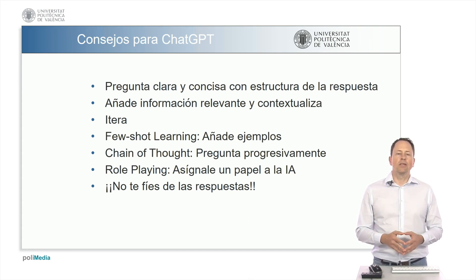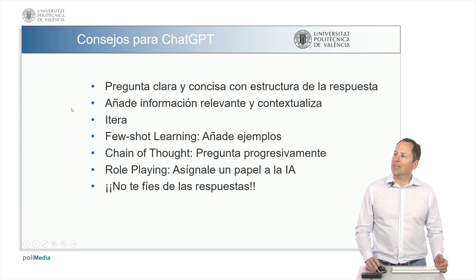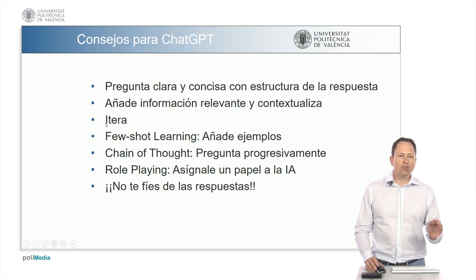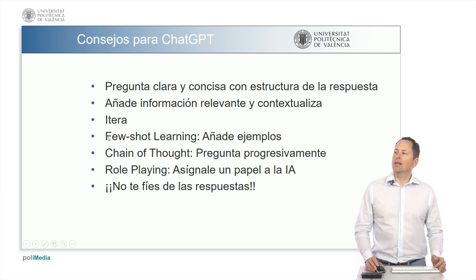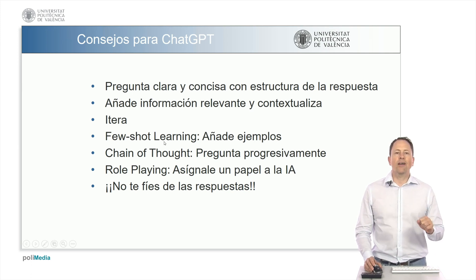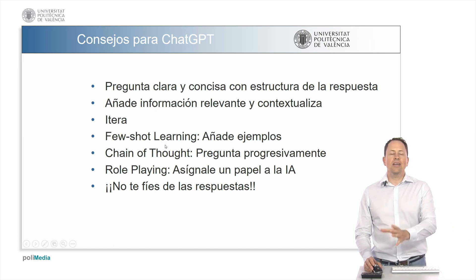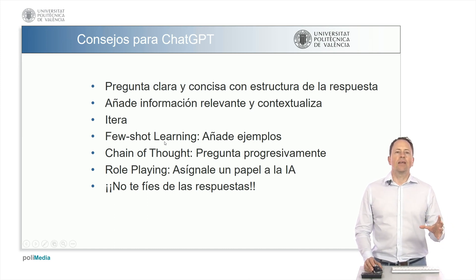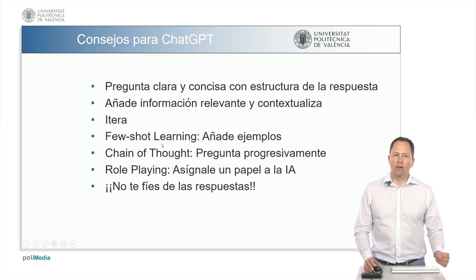Often it might not provide the exact result initially, requiring us to iterate. It might take 10 or 15 questions before we obtain the desired result. We can employ various techniques, such as few-shot learning, where we provide examples of how we desire the answer to be formulated — for instance, asking it to give us data similar to a given example, or saying: I want you to give me a summary of this text following this model.